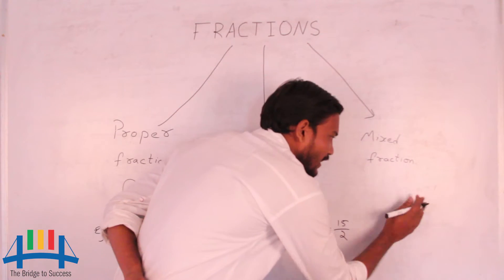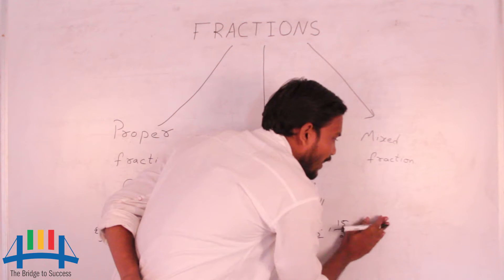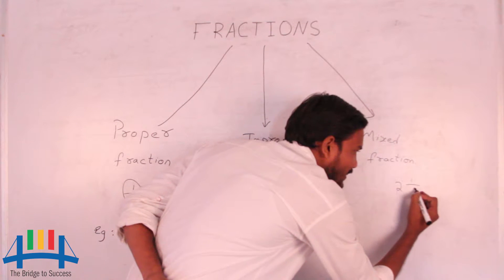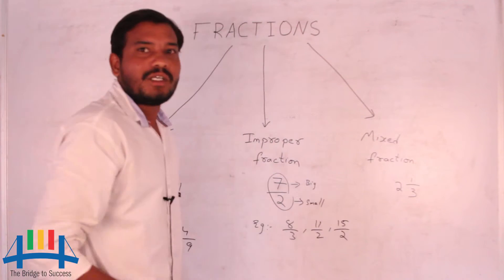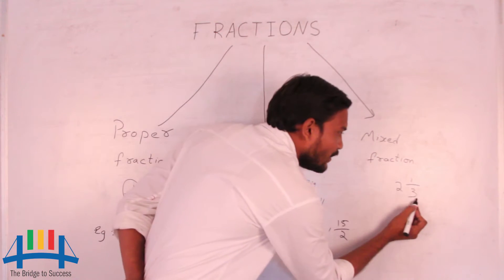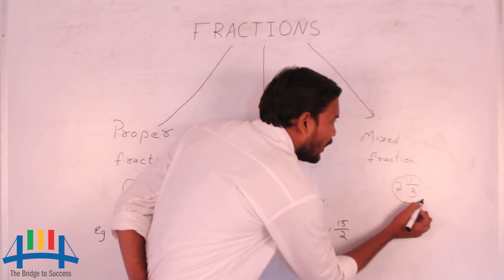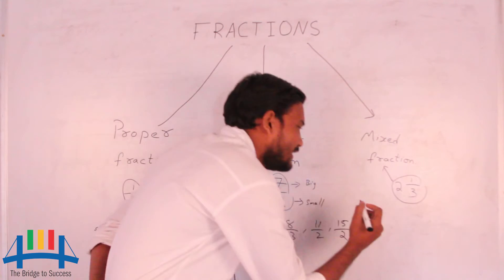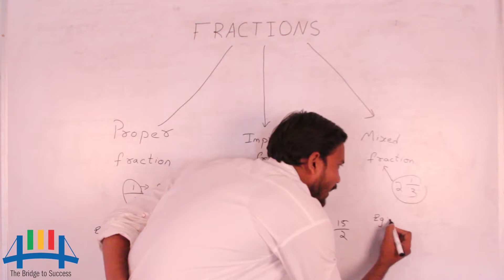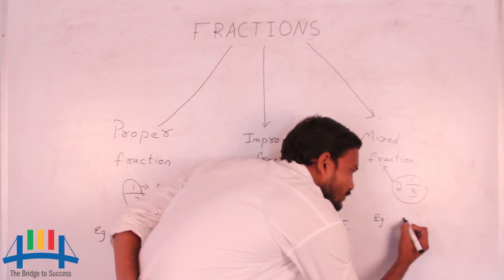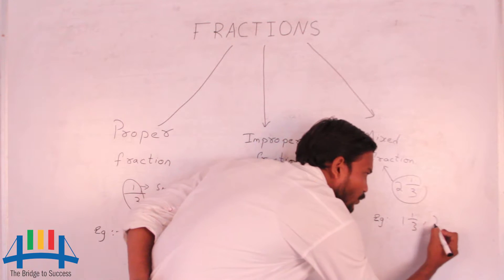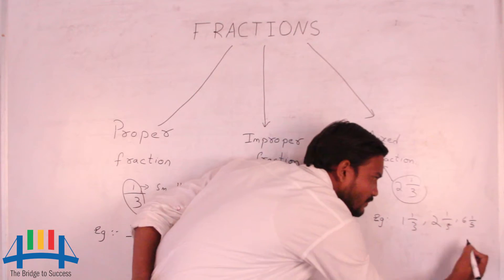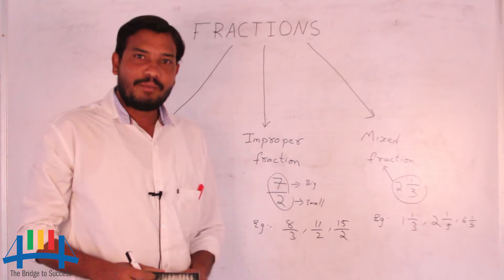Now, mixed fraction. In a mixed fraction, we have a whole part — that means any whole number — and it also has a fractional part. If you have a whole part and a fractional part together, we call it a mixed fraction. Examples for the mixed fraction are 1 and 1 by 3, 2 and 1 by 5, and 6 and 1 by 5.